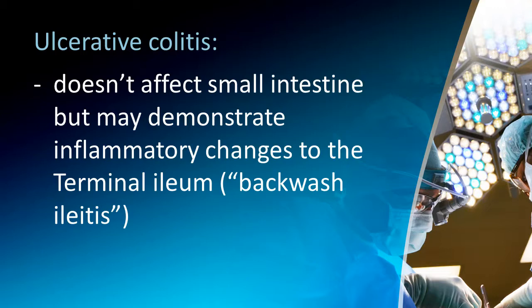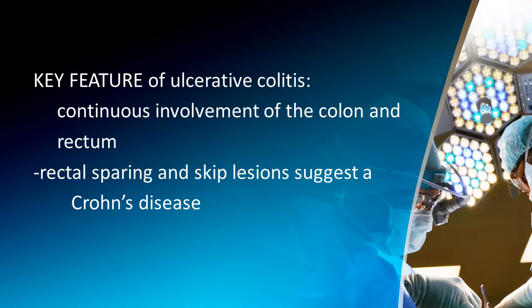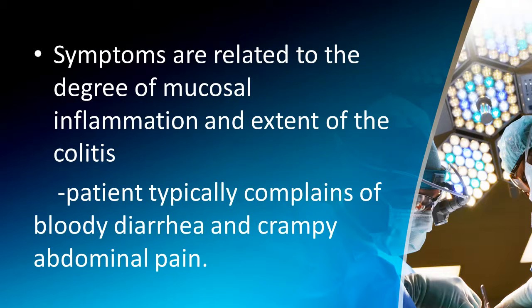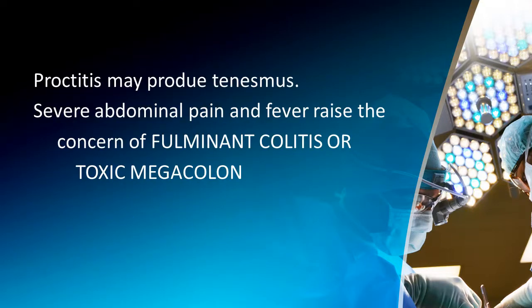Ulcerative colitis does not affect the small intestine but may demonstrate inflammatory changes to the terminal ileum, known as backwash colitis. Key features include continuous involvement of the colon and rectum — rectal sparing and skip lesions suggest Crohn's disease instead. Symptoms relate to the degree of mucosal inflammation; patients typically complain of bloody diarrhea and crampy abdominal pain. Proctitis may produce tenesmus, and severe abdominal pain with fever raises concern for fulminant colitis or toxic megacolon.